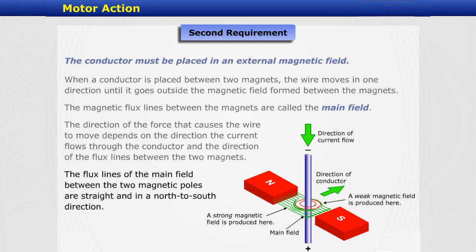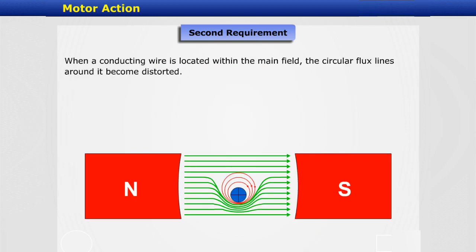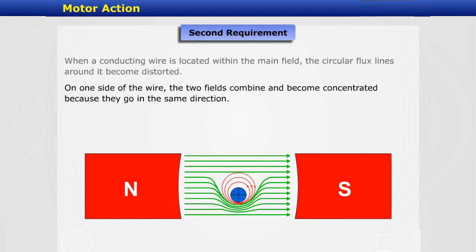The flux lines of the main field between the two magnetic poles are straight and in a north-to-south direction. When a conducting wire is located within the main field, the circular flux lines around it become distorted. On one side of the wire, the two fields combine and become concentrated because they go in the same direction.